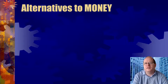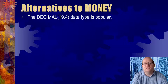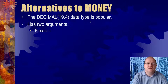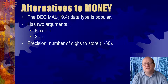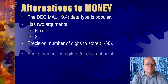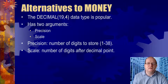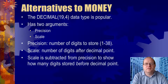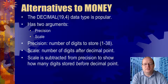A great alternative to the money data type is the decimal data type — specifically decimal(19,4). The decimal data type takes two arguments in the brackets. The first is the precision, here it's 19, and the second is the scale, here it's 4. Precision is the total number of digits to store, ranging from 1 to 38. Scale is the number of digits after the decimal point, and the digits before the decimal point equals precision minus scale.